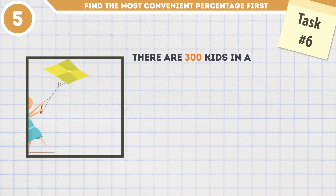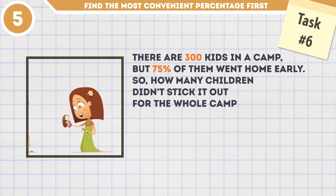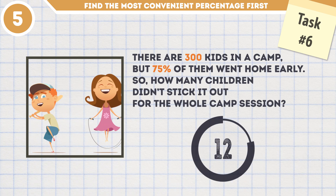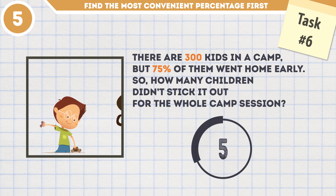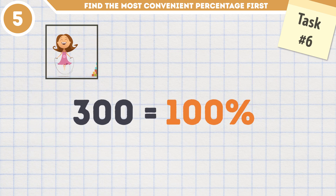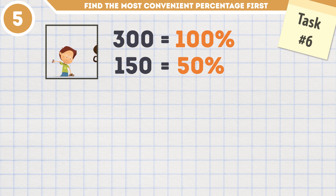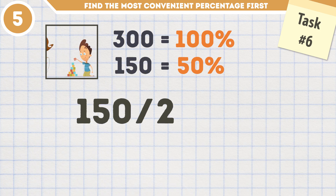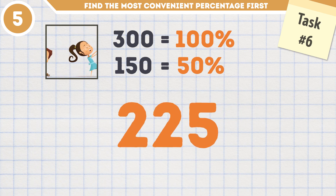Task number 6. There are 300 kids in a camp, but 75% of them went home early. How many children didn't stick it out for the whole camp session? We know 300 kids make 100%, so 150 is 50%. But we need 75%, so let's halve 50% to find the remaining 25% — divide 150 by 2 to get 75. Then add that 75 to 150, and you'll learn that 225 kids decided to cut camp short.